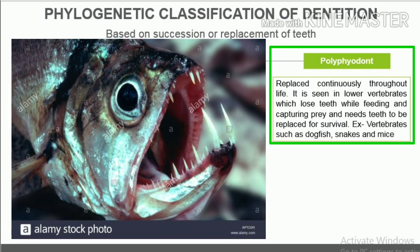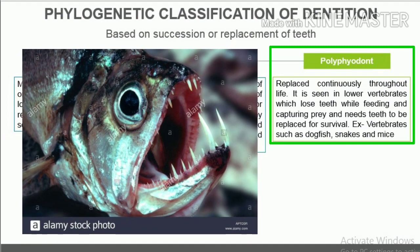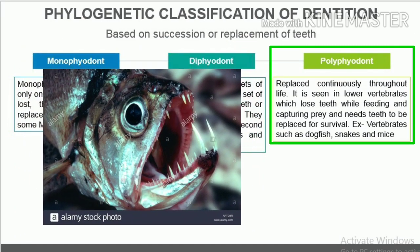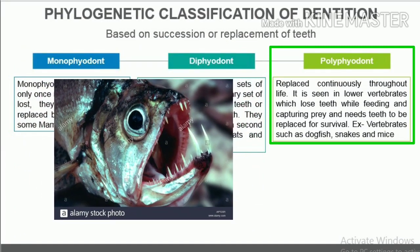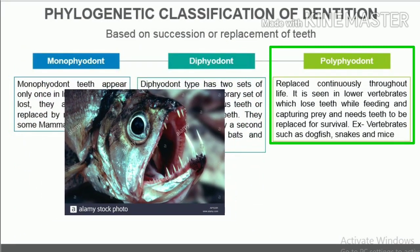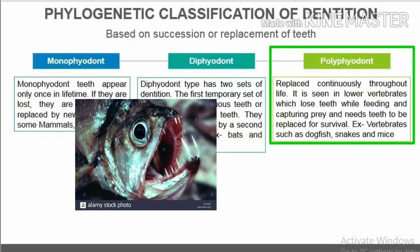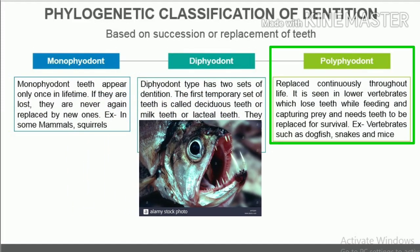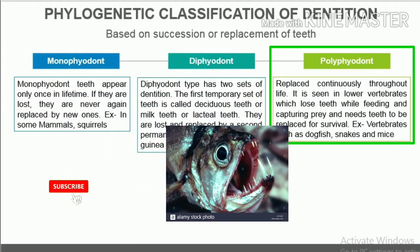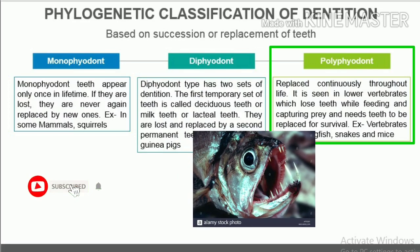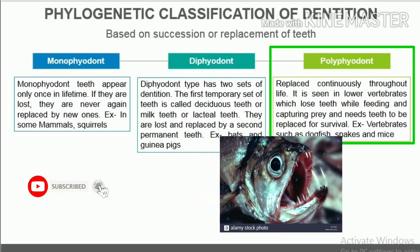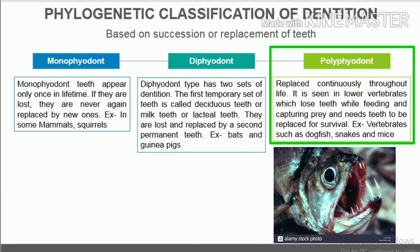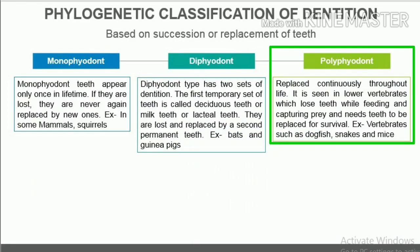Polyphyodont dentition involves teeth that are replaced continuously throughout life. It is seen in lower vertebrates which lose teeth while feeding and capturing prey and need teeth to be replaced for survival. Examples include vertebrates such as dogfish, snakes, and mice.